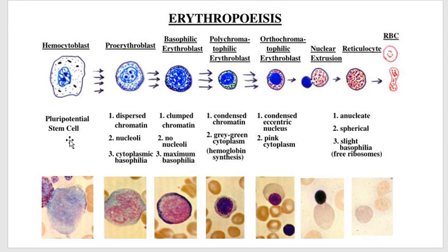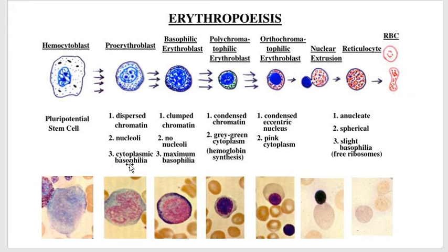We have the stem cell, which is pluripotent and also known as hemocytoblast. This is the one that then matures into a proerythroblastic stage. In this stage, we have a dispersed chromatin, definite nucleoli, and cytoplasmic basophilia. When you look at this under the microscope, you actually see patches of red within this particular cell. As it goes on, you see clamped chromatin structure with no nucleoli and maximum basophilia.